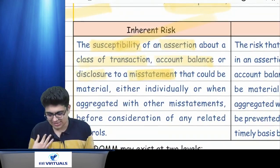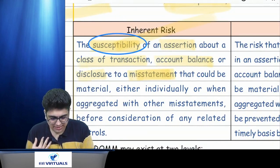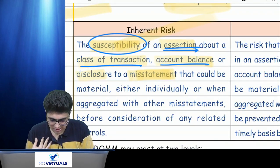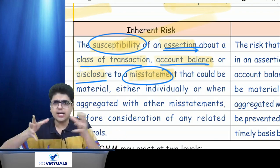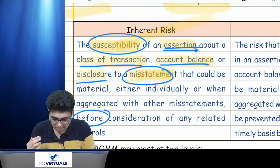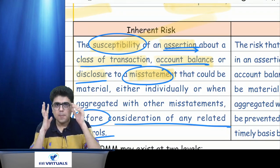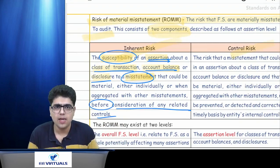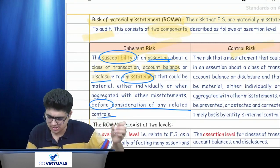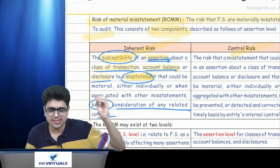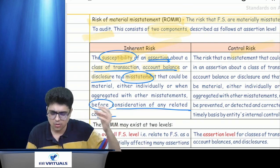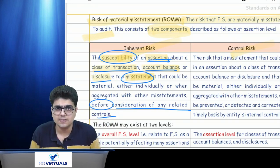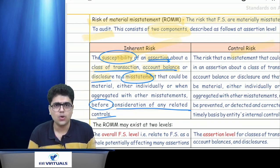Inherent risk is the susceptibility of an assertion related to ABCD — account balance, class of transaction, or disclosure — to a misstatement that could be material, individually or when aggregated with others, before considering any related control. Because inherent risk, as the name suggests, is inherent — we are not considering any control.